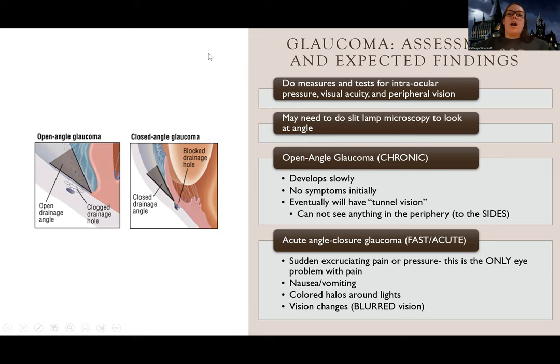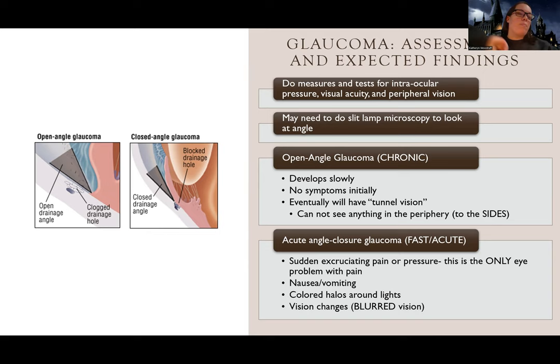What are my assessments and expected findings for glaucoma? We're going to do measures and tests for intraocular pressure — you don't need to know the normal intraocular pressure, just know that's a priority test. We'll also check for visual acuity to see how they're seeing, and check for peripheral vision. A doctor can also do a slit lamp exam and look at the actual angle, because if it's completely closed versus just getting clogged, that's a very different treatment.